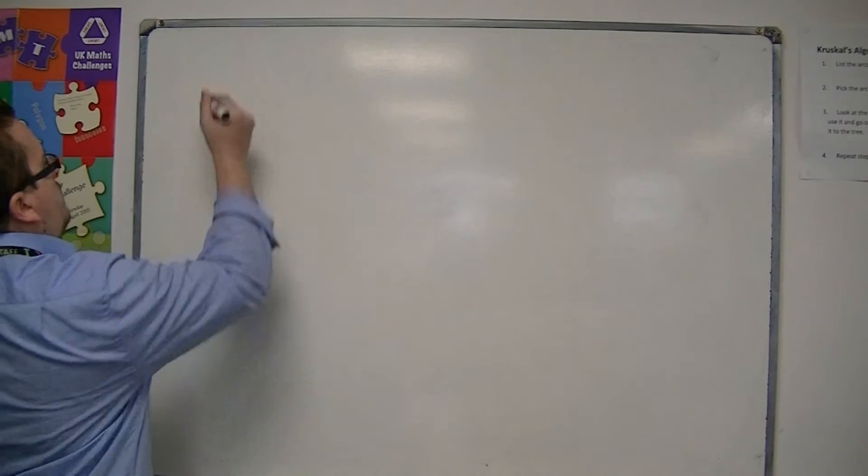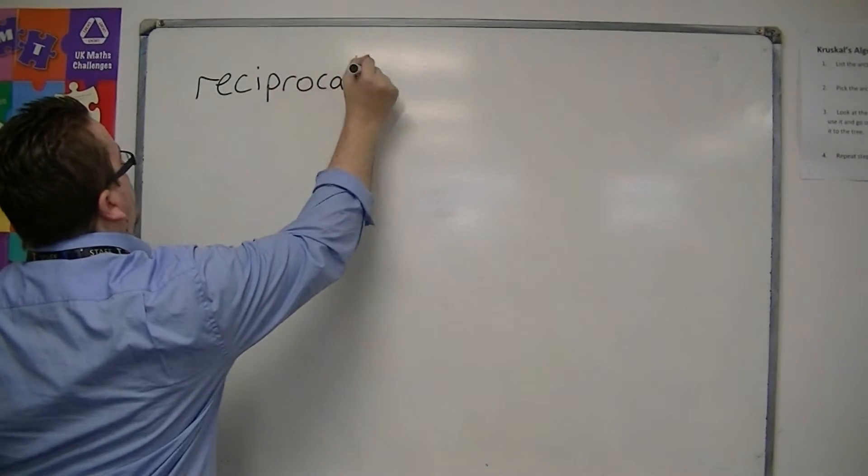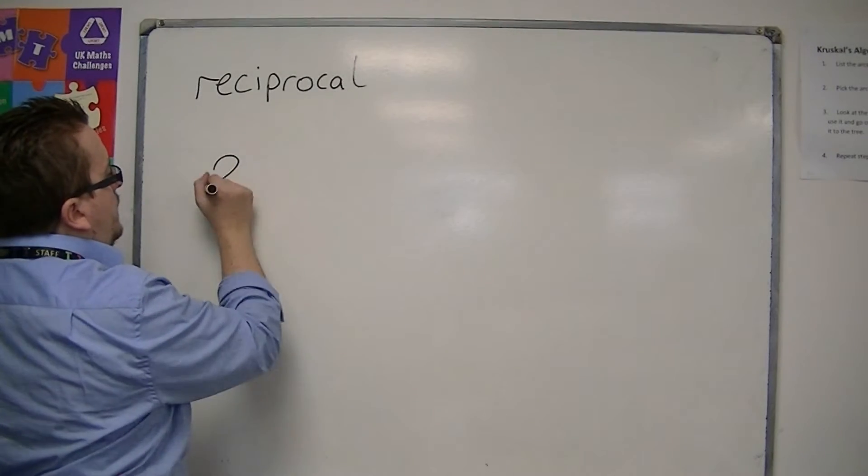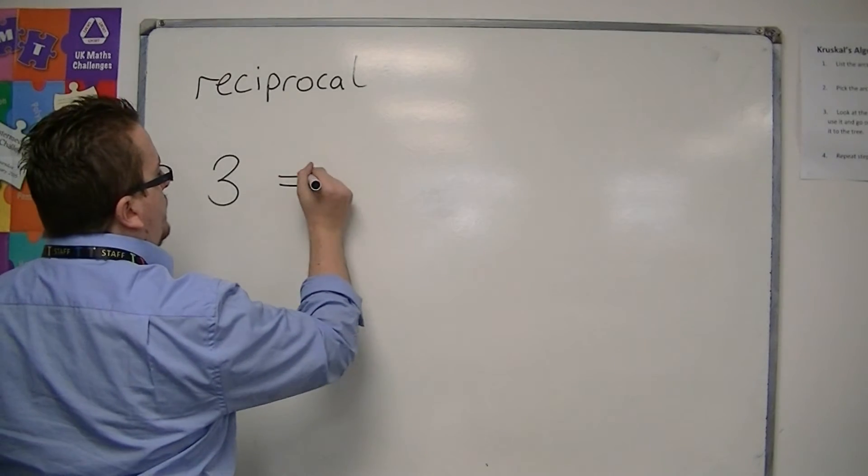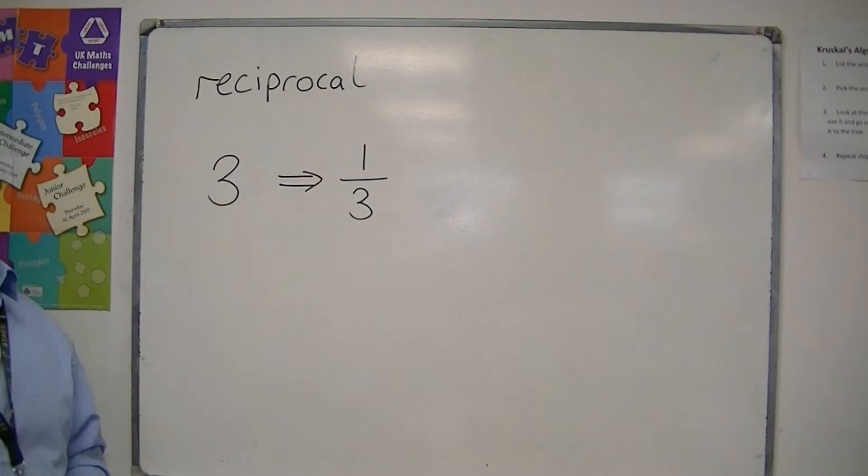Okay, so by the term reciprocal, spelt like this, if you have a number like the number 3, then the reciprocal is 1 over that number, so 1 third.